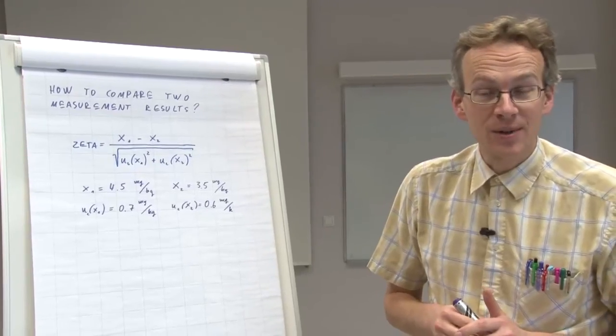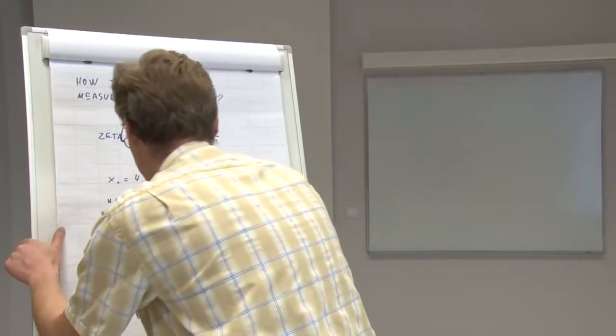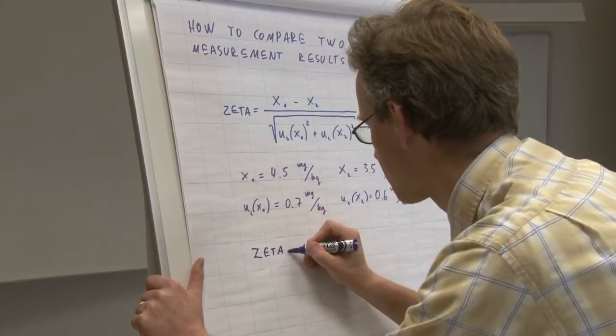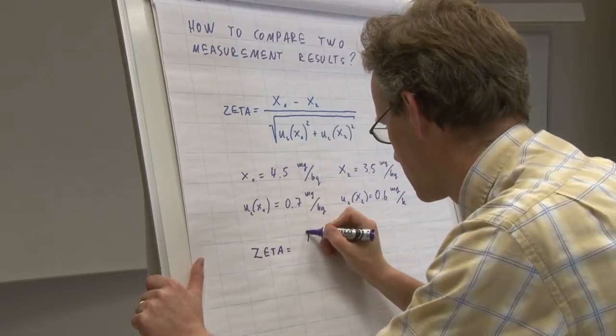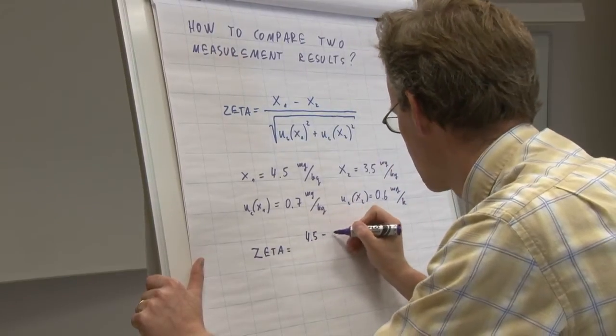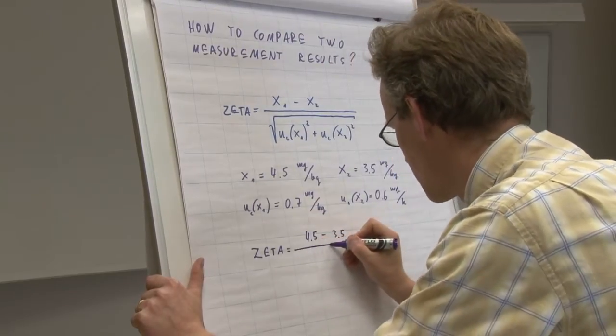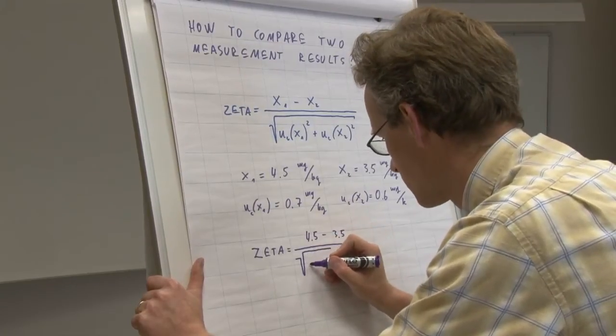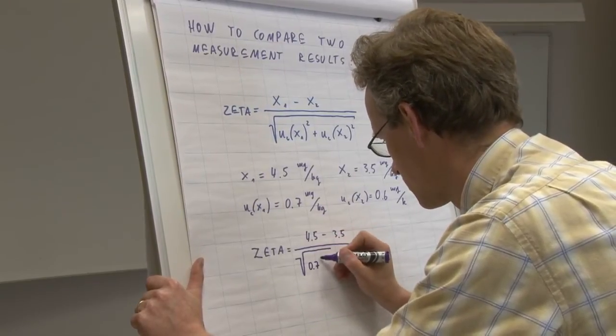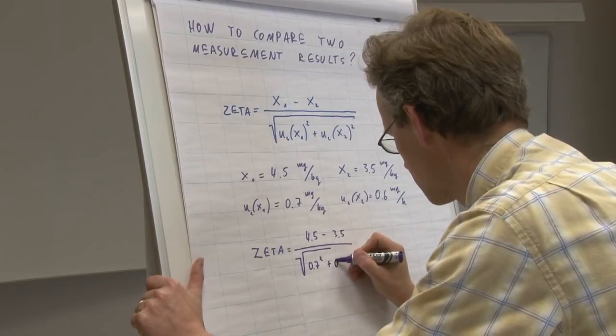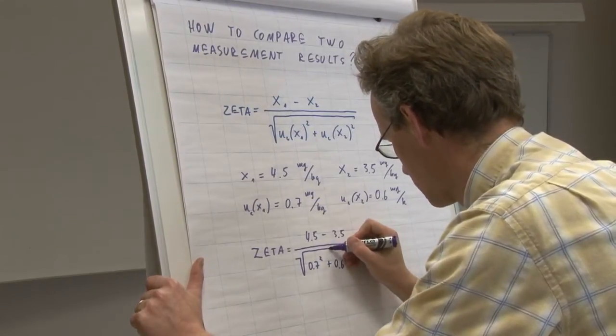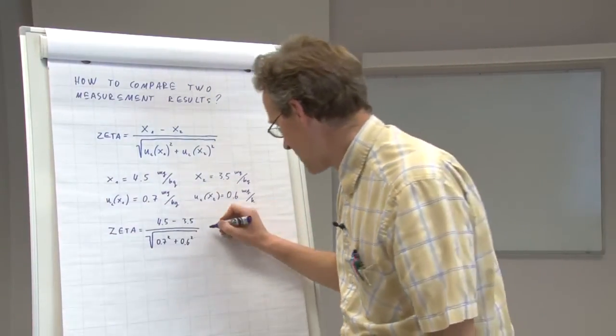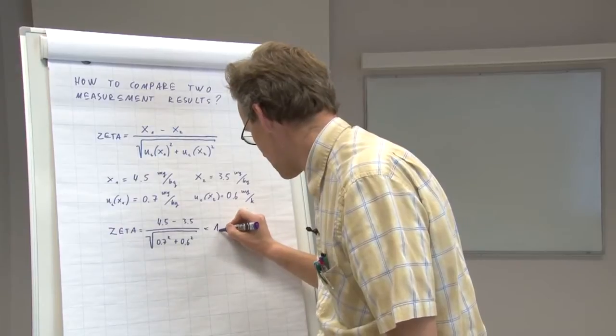If we now calculate the zeta score, we will find that the zeta score is 1.1.